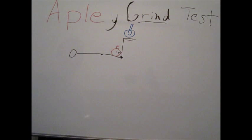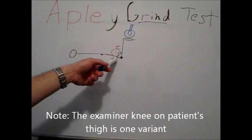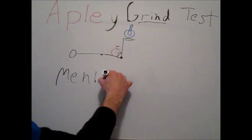This is a compression of the examiner's knee onto the patient's posterior thigh, and then putting axial force internally and externally rotating. If it's painful, then that's a positive Apley grind test, which also, like the McMurray, tests the meniscus. You can think of this as grinding the apple.